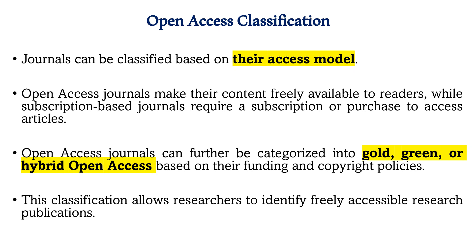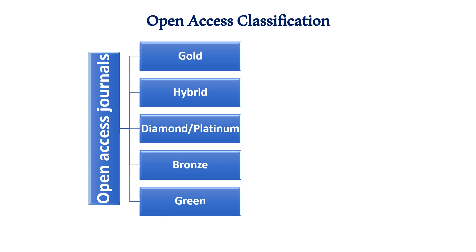Within open access, there are several subcategories. Gold open access means publishers make the article fully accessible on the journal's website under a Creative Commons license or similar. In this case, an Article Processing Charge (APC) is usually paid by the authors or their funders.